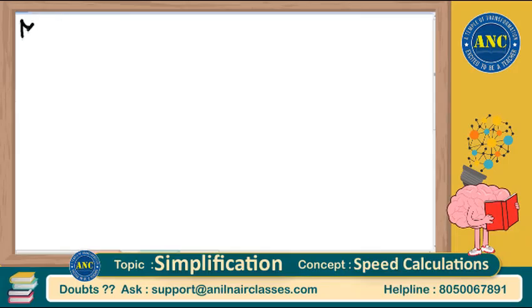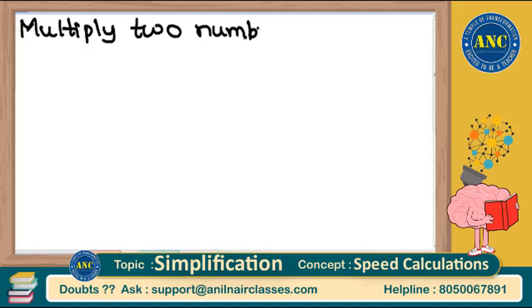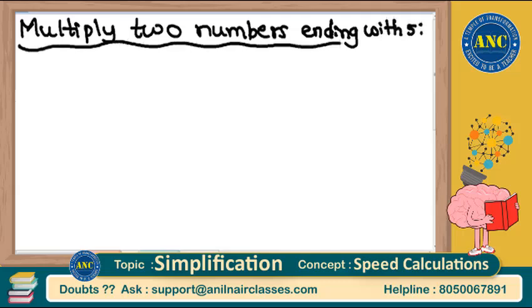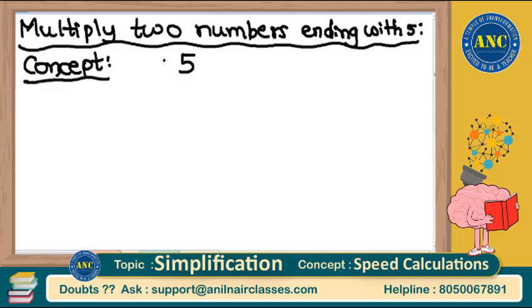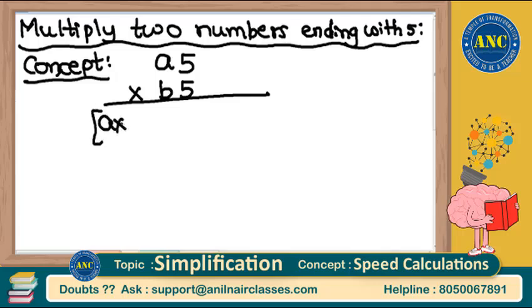How to multiply two numbers ending with 5? We are continuing the concept we discussed about numbers ending with 5 into multiplication. The formula is: a5 × b5 = a×b + (a+b)/2, followed by the last two digits.